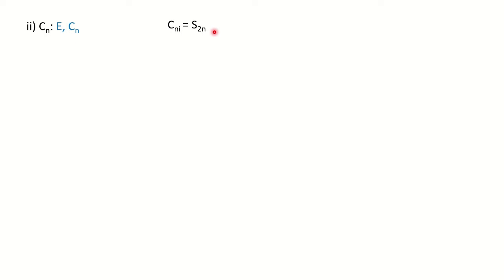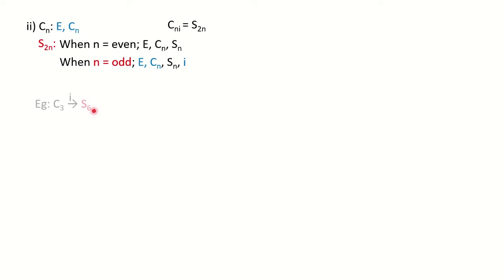The second case: our molecule has C3 symmetry. For Cn groups, you have E and Cn. There is a general formula: on adding an inversion center to a Cn group, it converts to the S2n group. If n is even, the group has E, Cn, and Sn; if n is odd, inversion is present. In our question, C3 on adding inversion gives S2n = S(2×3) = S6. So the C3 group on adding inversion converts into S6, and you can note the corresponding list of symmetry elements.